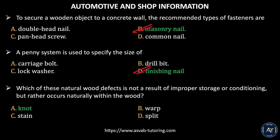Next question: which of these natural wood defects is not a result of improper storage or conditioning, but rather occurs naturally within the wood? Option A, knot. Option B, warp. Option C, stain. Option D, split. The correct answer is Option A, knot.